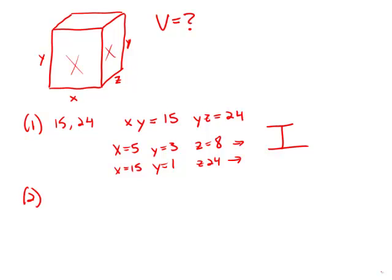Statement number two tells us merely that two opposite sides of the solid has area 40. So let's assume that this is the bottom and the top, and that would be x times z equals 40.